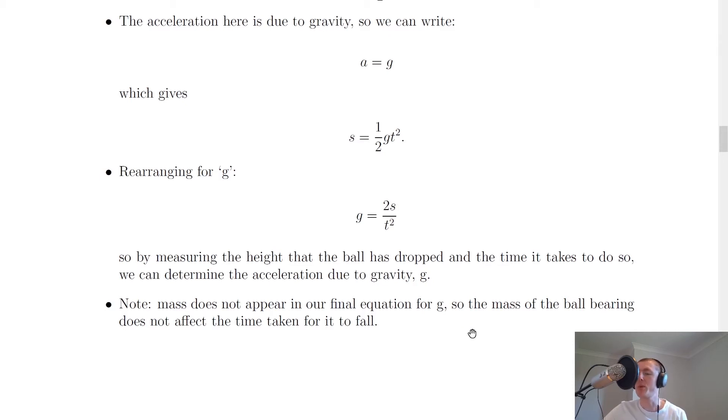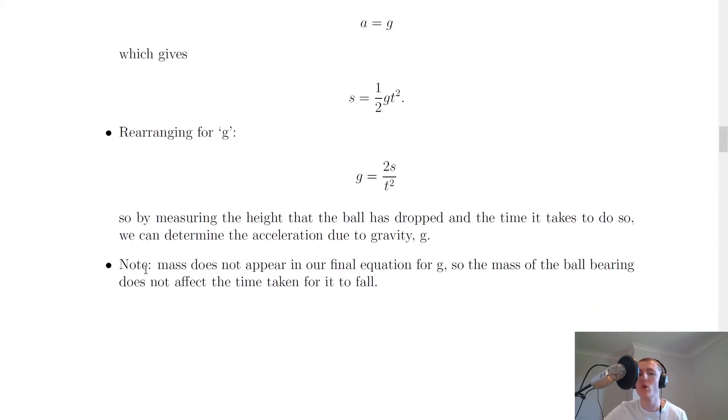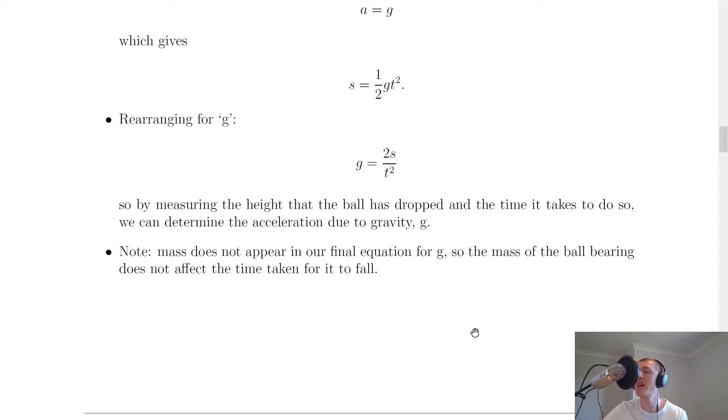So this experimental procedure that we're going to look at is quite simple. All you're doing is dropping a ball and measuring the time taken for it to fall. It says here, note that mass does not appear in our final equation for G. So the mass of the ball bearing does not affect the time taken for it to fall. Because in a sense, this falling ball bearing is a projectile. And you might remember for projectiles, the mass of an object does not affect the time taken for an object to fall. And that's because the only force acting on it is that due to gravity downwards.